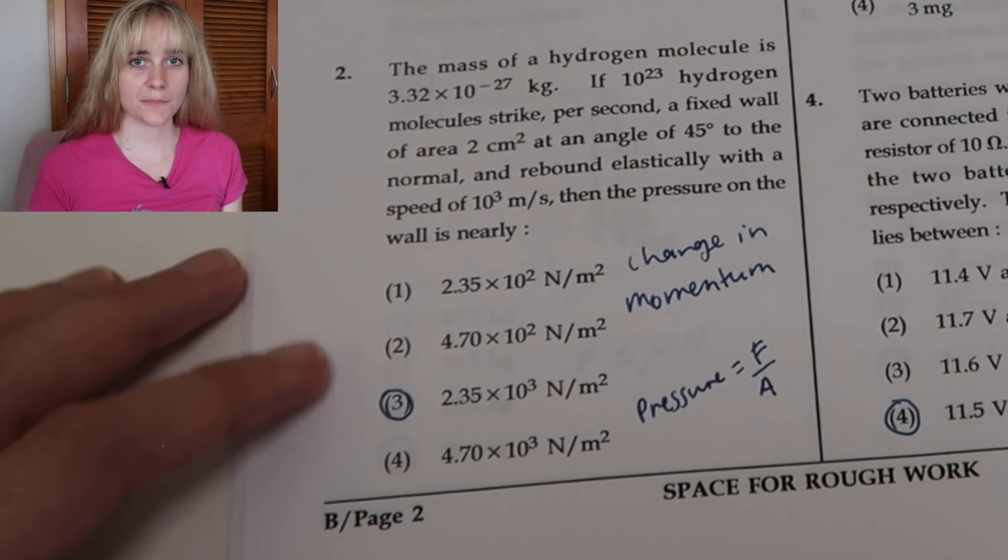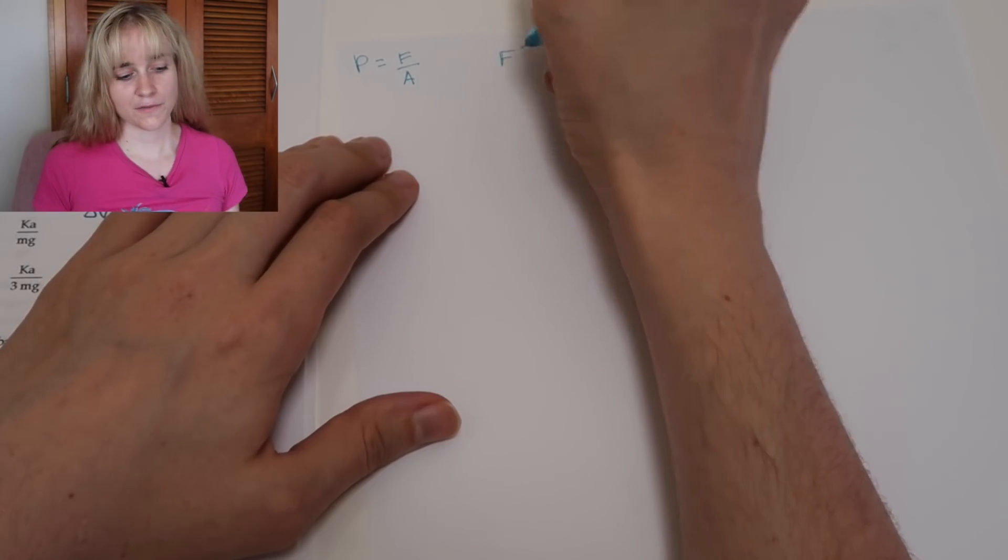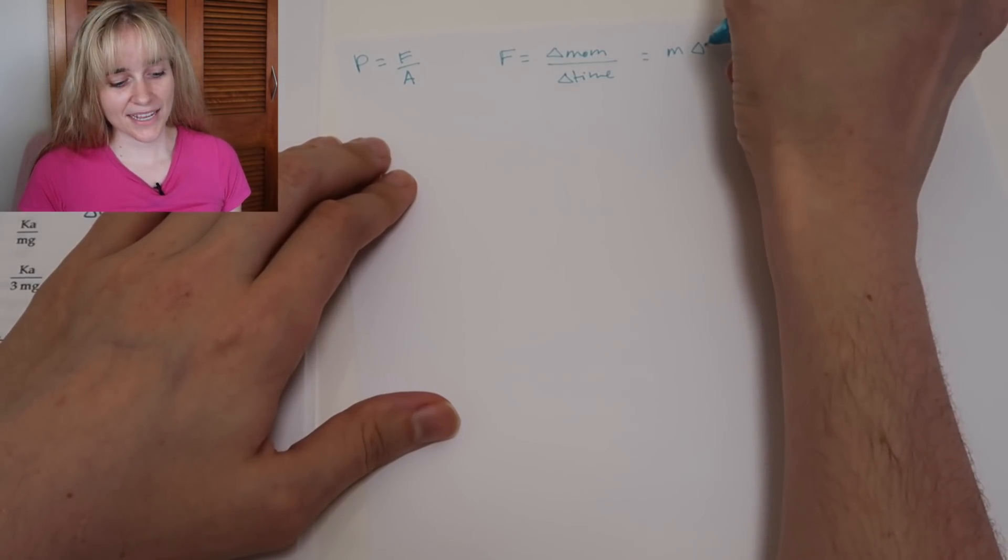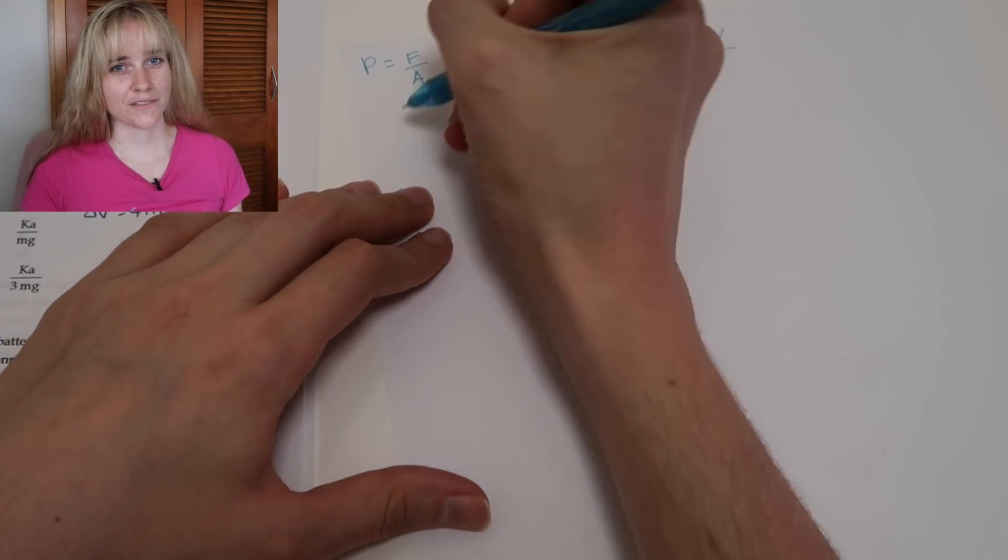Our second question is about molecules bouncing off a wall and what pressure that's going to exert on the wall. So we have the mass of a hydrogen molecule is 3.32 times 10 to the minus 27 kgs. If 10 to the 23 hydrogen molecules strike per second a fixed wall of area 2 centimeters squared at an angle of 45 degrees to the normal and rebound elastically with a speed of 10 to the 3 meters per second, then the pressure on the wall is nearly, and we're asked to find that value. So the basic ideas here are going to be change in momentum and working out pressure. This is a pretty easy one to remember: pressure is force over area, and in terms of impulse force, well force is going to be the change in momentum over the change in time. And if we're dealing with constant mass, which I assume these molecules are, then that's going to come down to mass times change in velocity over a change in time.